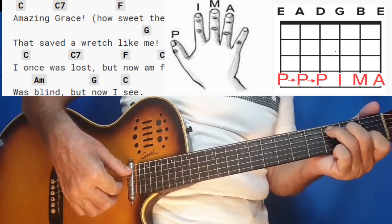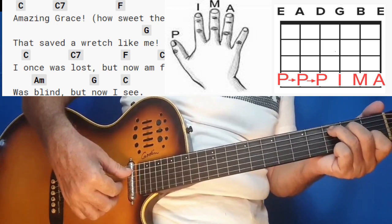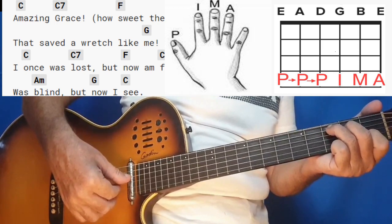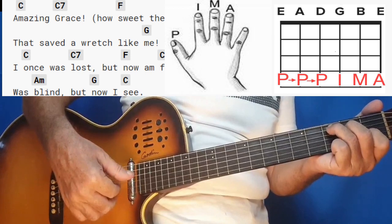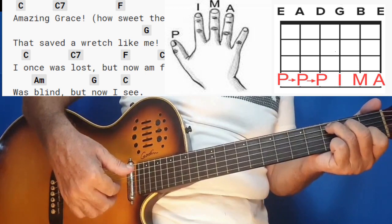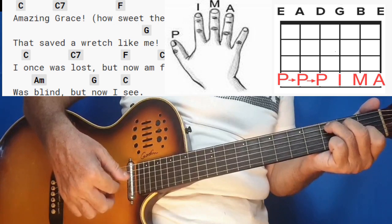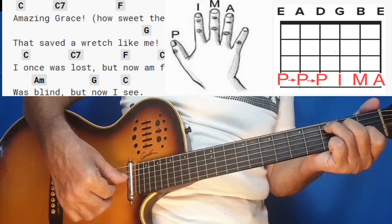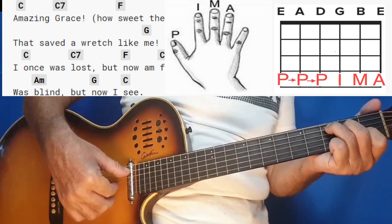If you take the C major chord, the thumb will play on the A string and the D string, and then each finger has its own string. And the thumb again on the D string and then back to the A string.